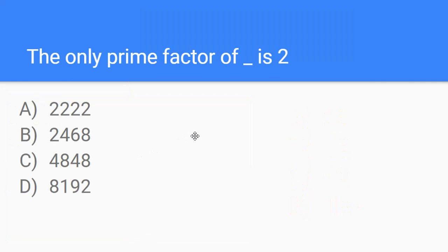Our next question is, the only prime factor of blank is 2. So we know that, let's first see which numbers can be divided by 3. And if we add all four numbers of every number, and it's divisible, and it's a multiple of 3, it means it will be divisible.